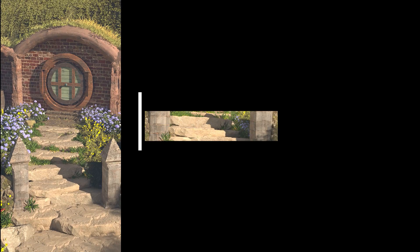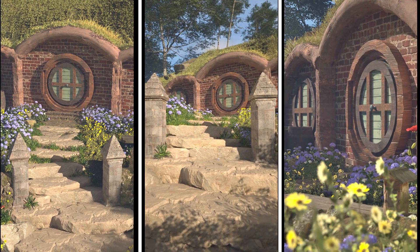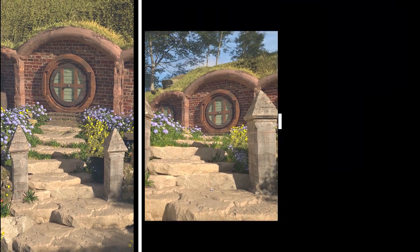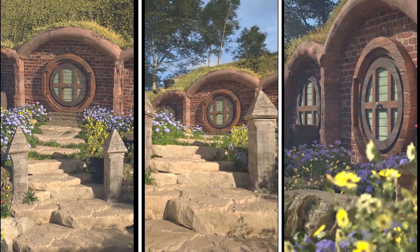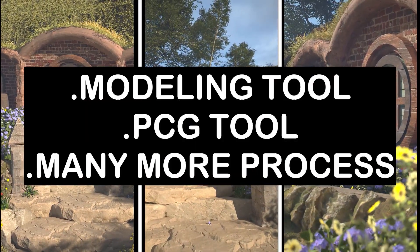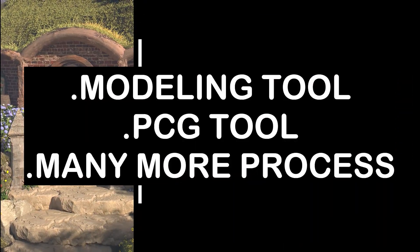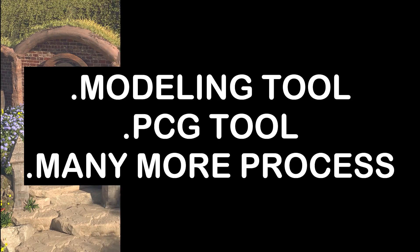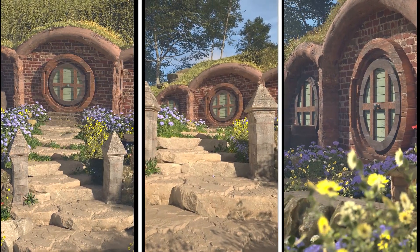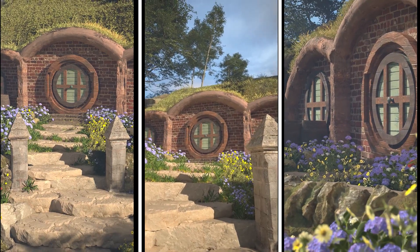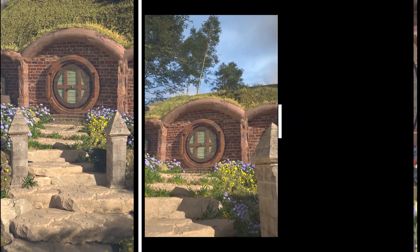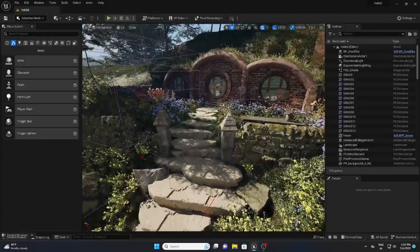In today's video we will be creating a hobbit house, also known as the Bag End. This process is really easy. I will show you how to use the modeling tool, the PCG tool, and all different kinds of processes. Using this process you can create any other 3D environment. Without further ado, let's start the video — this is the scene we are going to create.